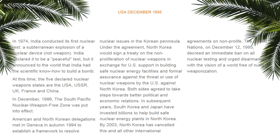In autumn 1994, American and North Korean delegations met in Geneva to establish a framework to resolve nuclear issues on the Korean Peninsula. North Korea would sign the Nuclear Non-Proliferation Treaty in exchange for U.S. support in building safe nuclear energy facilities and formal assurances against nuclear weapons use by the U.S. against North Korea. Both sides agreed to improve political and economic relations, but by 2003 North Korea cancelled this and all other international agreements on non-proliferation. The UN, on December 12, 1995, decreed an immediate ban on all nuclear testing and urged disarmament.